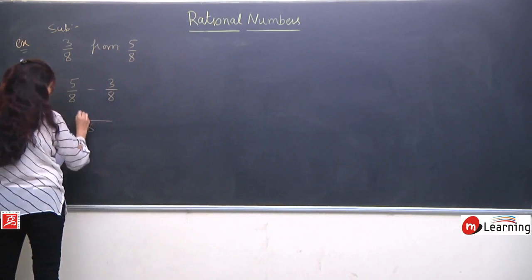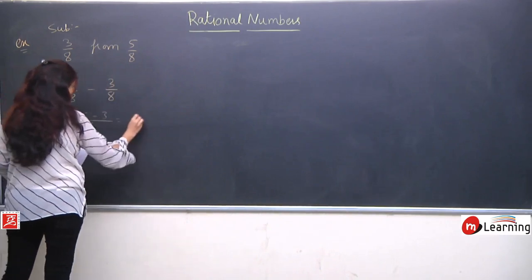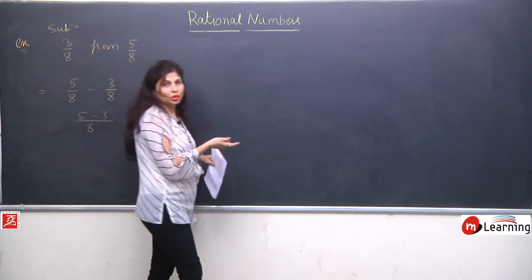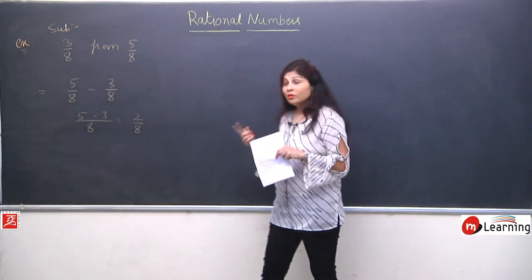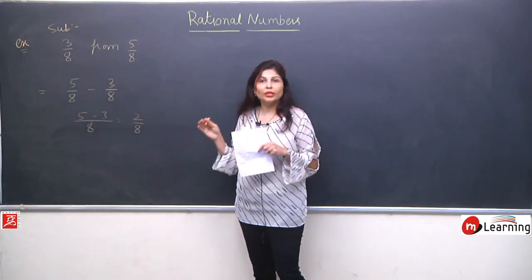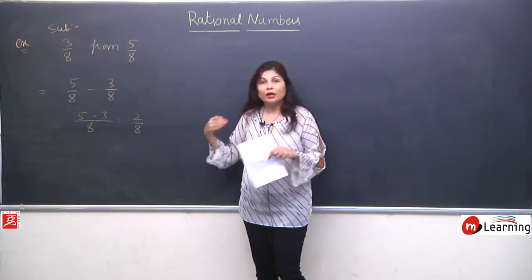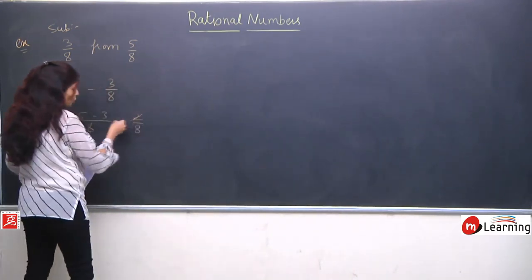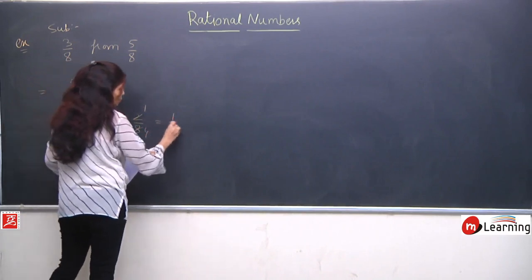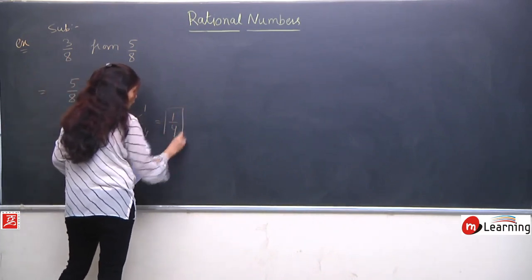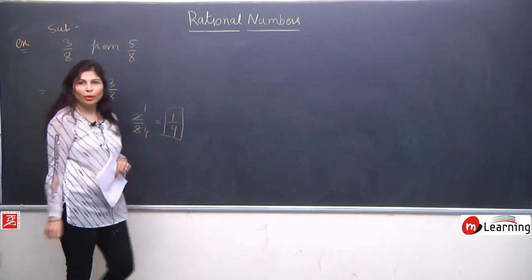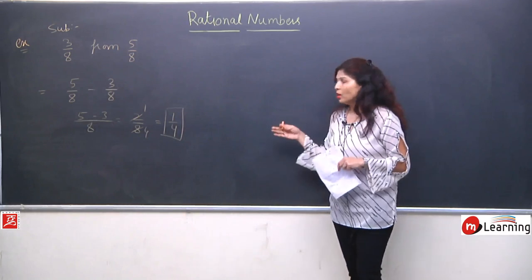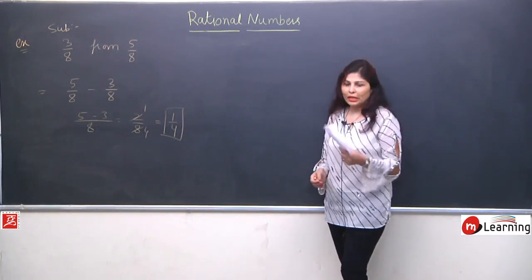The LCM is the same, so 5 - 3 = 2 upon 8. As always, we try to solve to simplest or lowest form. Both 2 and 8 come in the table of 2: 2×1=2 and 2×4=8. So the answer simplifies to 1/4. Whenever simplest form is achievable, we always write the answer in simplest form.